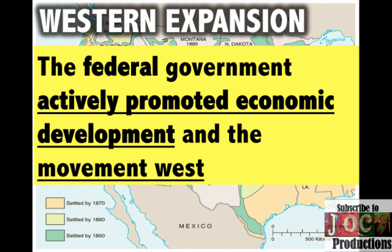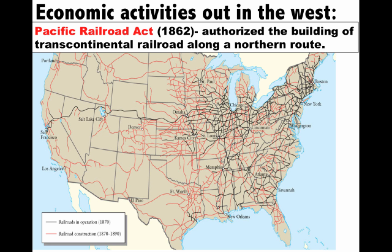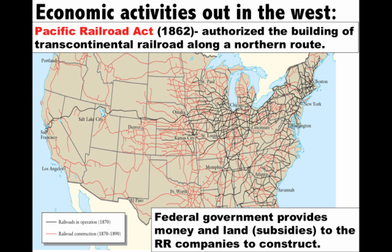Another important idea is the federal government actively promoting economic development and the movement West. A lot of people have this idea of rugged individualism — cowboys on stagecoaches heading West — but economic activities out in the West were largely driven by federal government policies. For example, in 1862, the Pacific Railroad Act was passed during the Civil War, authorizing the building of the transcontinental railroad along a northern route. The federal government provided money and land subsidies to railroad companies, and the transcontinental railroad linked California with the rest of the Union, creating a national market.